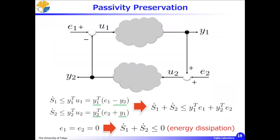One of the most important properties of passivity is its preservation in terms of interconnections — parallel connection and feedback connection. Let us consider the standard feedback connection. Suppose both subsystems are passive, having storage functions S1 and S2. By taking the time derivative of the sum of S1 and S2, it turns out that the feedback connection can be shown to be again passive.